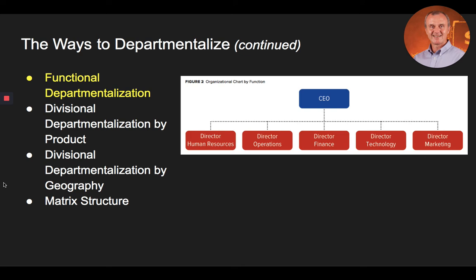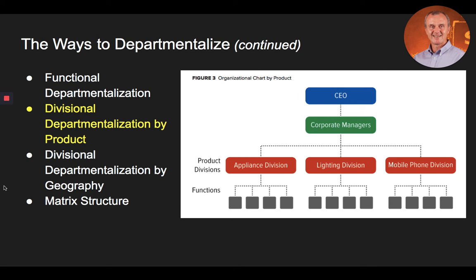Organizations that perform effectively with a strict functional structure tend to have only one or very few products and operate in a relatively stable environment. For organizations that continue to grow and produce a more diversified set of products, a divisional structure by product will better suit their needs. An example is shown in Figure 3 from your text. A divisional product structure is one in which the organization is structured around product groupings, where all aspects of a particular product or product line are placed in one division.